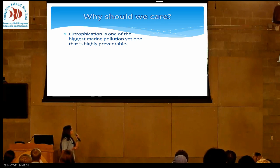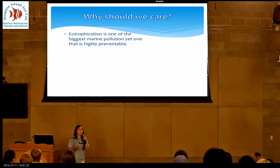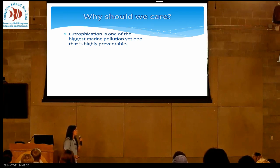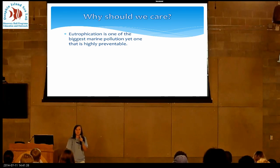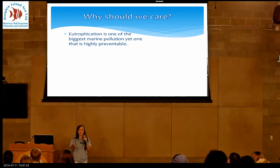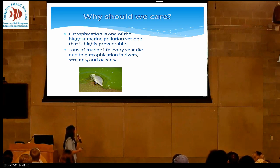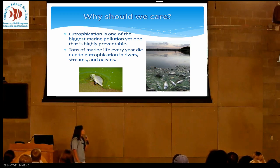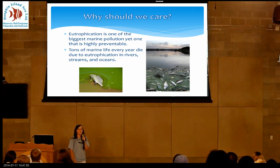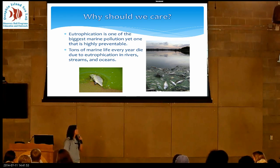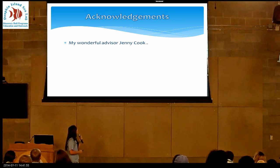Why should we care? Because eutrophication is one of the biggest marine pollutions in the world, and it's largely due to human activity — placing waste treatment and sewage treatment sites right on the water where it flows in. It affects fisheries, kills millions of fish every year, and continues to increase over the years.